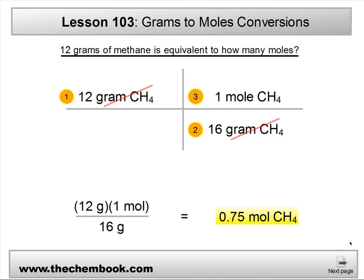And then position 2, we have 16 grams. And then of course position 3, we have the 1 mole. Now where do all these numbers come from? Well, the 12 grams of methane — that's the starting unit. You're told in the problem that you're starting with 12 grams.